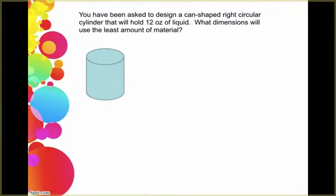We've been asked to design a can shaped right circular cylinder that's going to hold 12 ounces of liquid and it's going to have the least amount of material used. So we're trying to minimize our surface area. I've already got a picture drawn here. We're wanting to know what would the radius and the height of the cylinder be that would use the least amount of material.